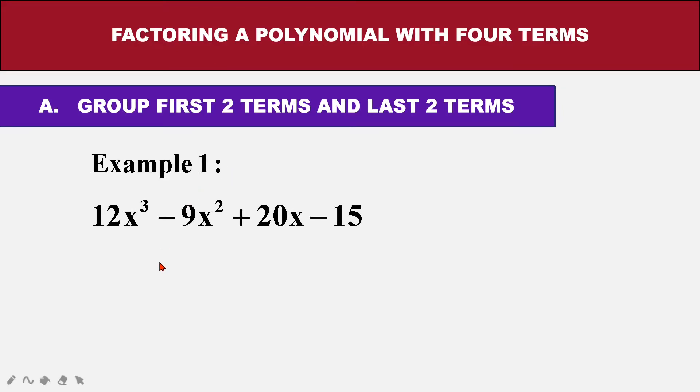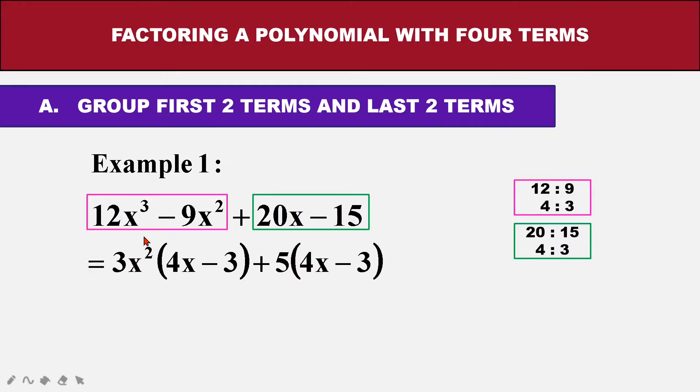So for example, I have this. The first 2 terms, I put in the pink box and the last 2 terms I put in the green box. So to do this method, I have to make sure that the ratio of the first 2 terms, for example, 12 to 9, is the same with the ratio for the last 2 terms. For example, 20 to 15 is also 4 to 3. So if I can get this ratio the same, then I can factorize it out.